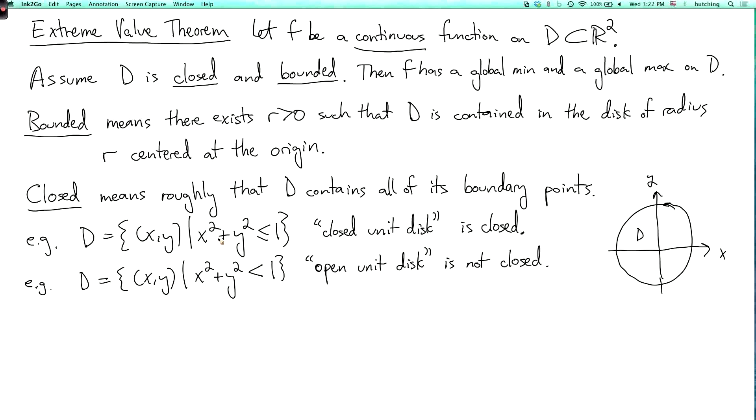Now to see why the assumption closed is needed in the extreme value theorem, let's look at the function f of x, y equals x. So this function has no global maximum or global minimum on the open unit disk.